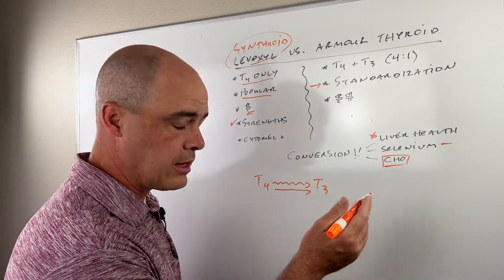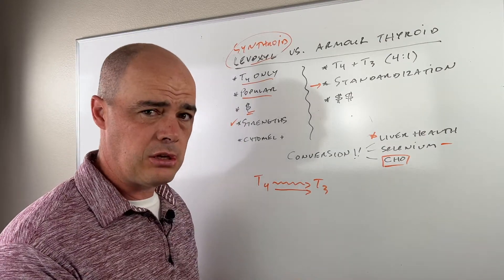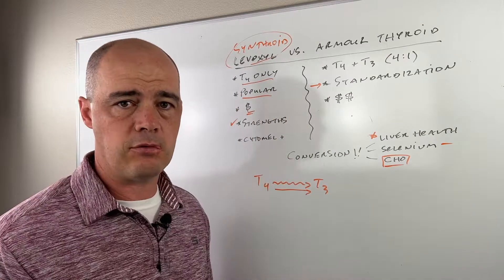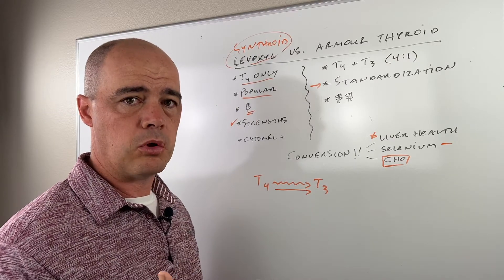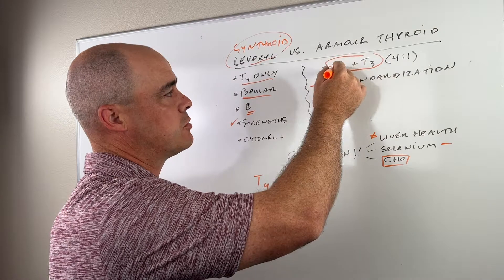So if somebody can convert T4 to T3, great. They can just be given T4. But most people with low thyroid can't. So that's where it's nice to give somebody a mix.